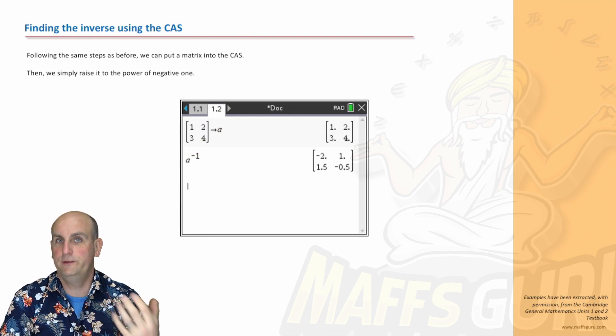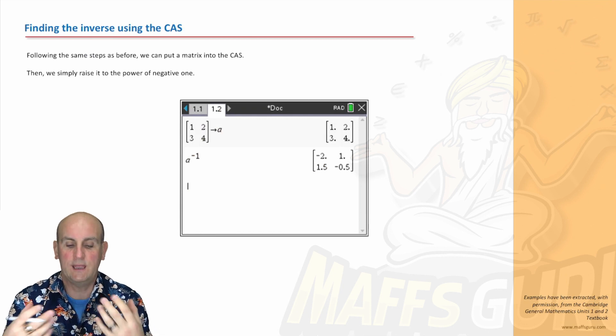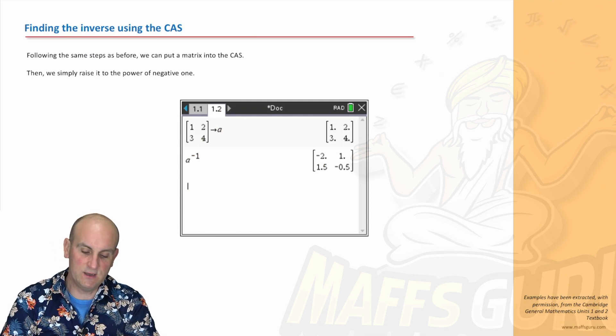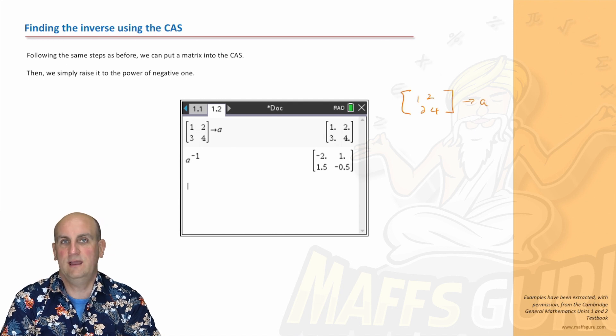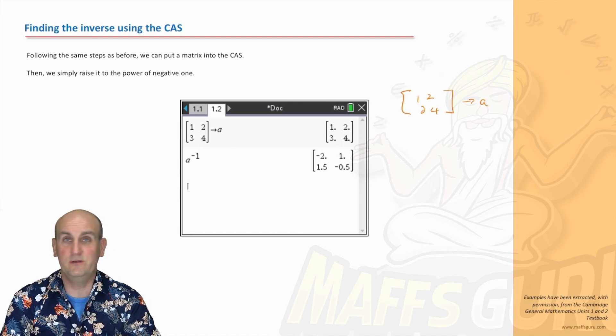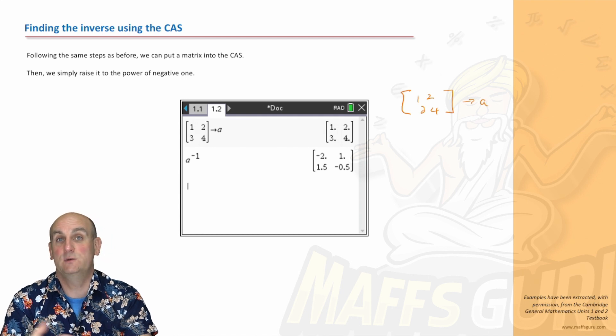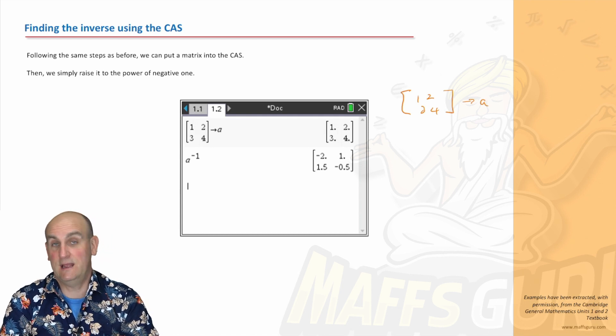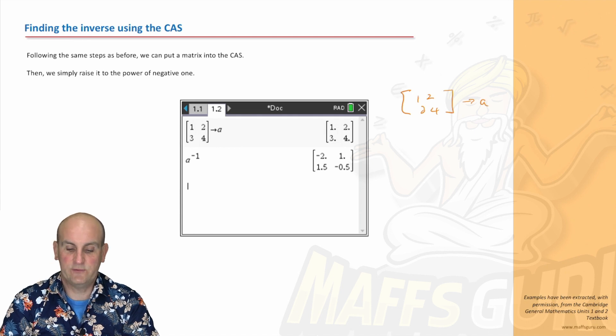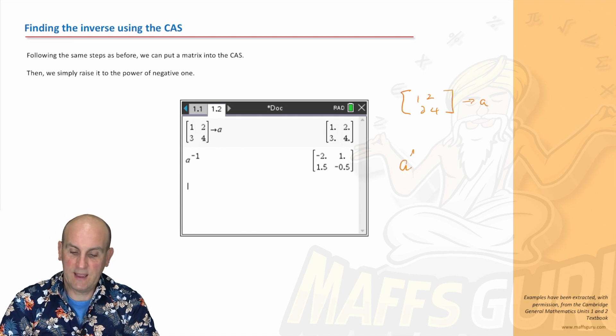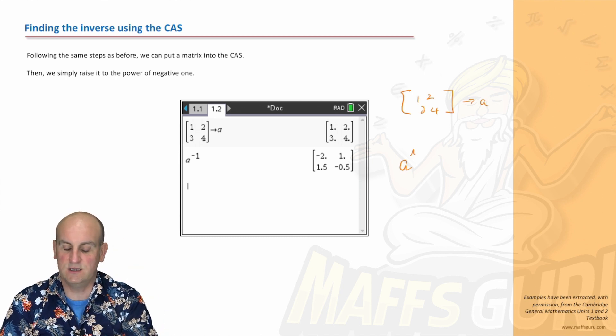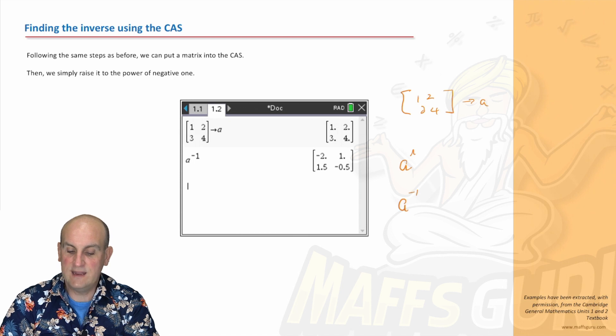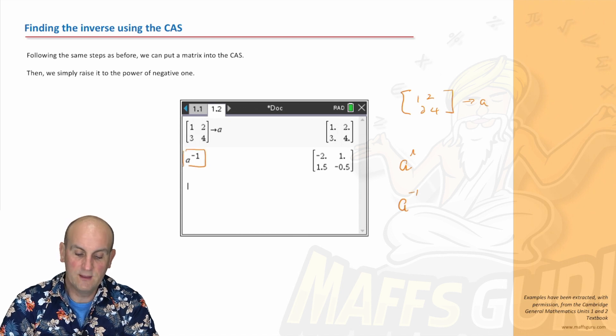Now, we already know that using the TI-inspire or the Casio class pad, we can put in a matrix, as I've done here. So I've got a matrix one, two, three, and four. And I've done the arrow and A. I've stored it into some variable A. Now, I could use capital letters if I wanted to, but the CAS doesn't really care one way or the other, and it's for me to interpret. So I can make that just into A. And what I've said to you is, when you raise that to the power, so you have the little carrot sign, or depending on how your calculator shows it, so long as you have that to the power of negative one, which is what I've done here, then lo and behold, out comes this inverse matrix.